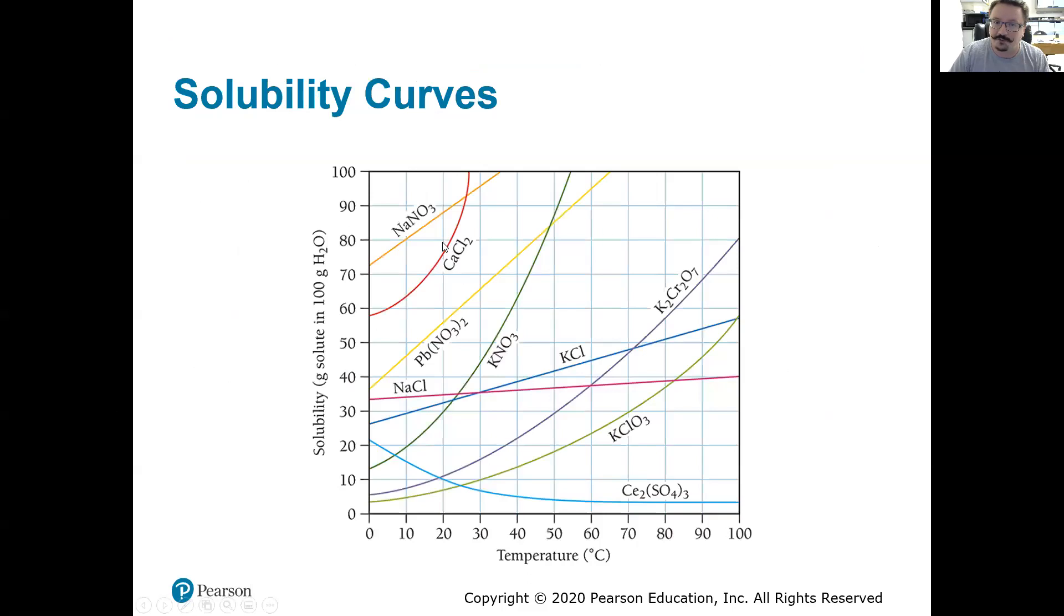I'm going to look at some solubility curves here. So solubility curves tell us how soluble is something in specific units. In this case, grams of solute in 100 grams of water. So how soluble is that? What mass of that can we get to dissolve? 10 grams, 30 grams, 80 grams, whatever. And then related to the temperature. So how does that solubility change as we increase the temperature? And you'll notice for the vast majority of these, the solubility increases.